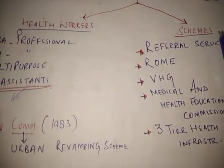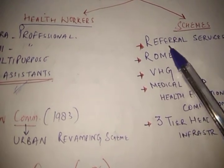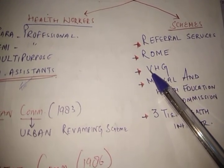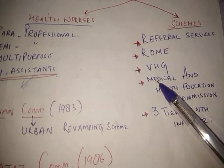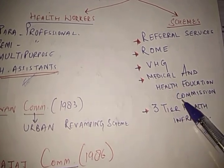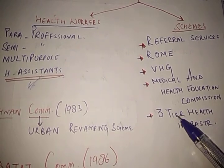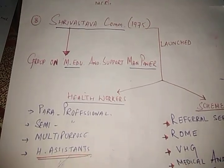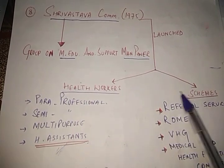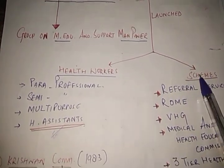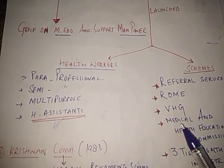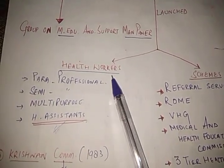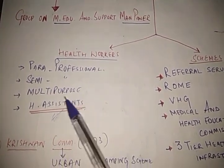The schemes launched by the Srivastava Committee include: referral services, reorientation of medical education, village health guide scheme, medical and health education commission scheme, and a three-tier health infrastructure in the form of Zila Parishad and Zila Samiti. So the Srivastava Committee came in 1975 and launched these schemes along with paraprofessional, semi-professional, multi-purpose workers and health assistants.